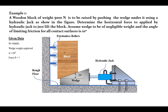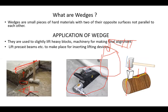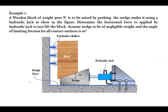The given data: W = 5000 Newton. The wedge weight is neglected because compared to the size of the slab, the wedge is very small — its weight will almost always be neglected. Alpha is equal to 10 degrees, the angle of limiting friction for all contact surfaces. The rollers are frictionless, while the floor below and the contact surfaces between the block and wedge are rough.